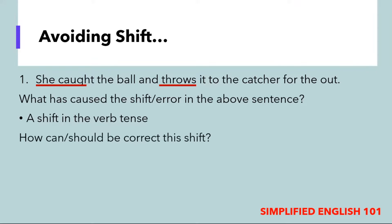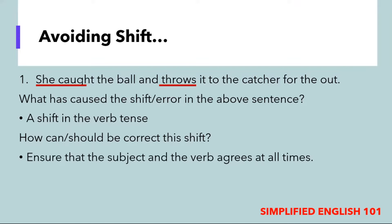Since we know what the shift is, how could we correct this? Except for exceptional cases where the intended meaning requires a change in the verb tense, we want to ensure that we maintain the same verb tense throughout. We can do so by making both verbs present or both verbs past tense: 'She caught the ball and threw it to the catcher,' or 'she catches the ball and throws it to the catcher.'